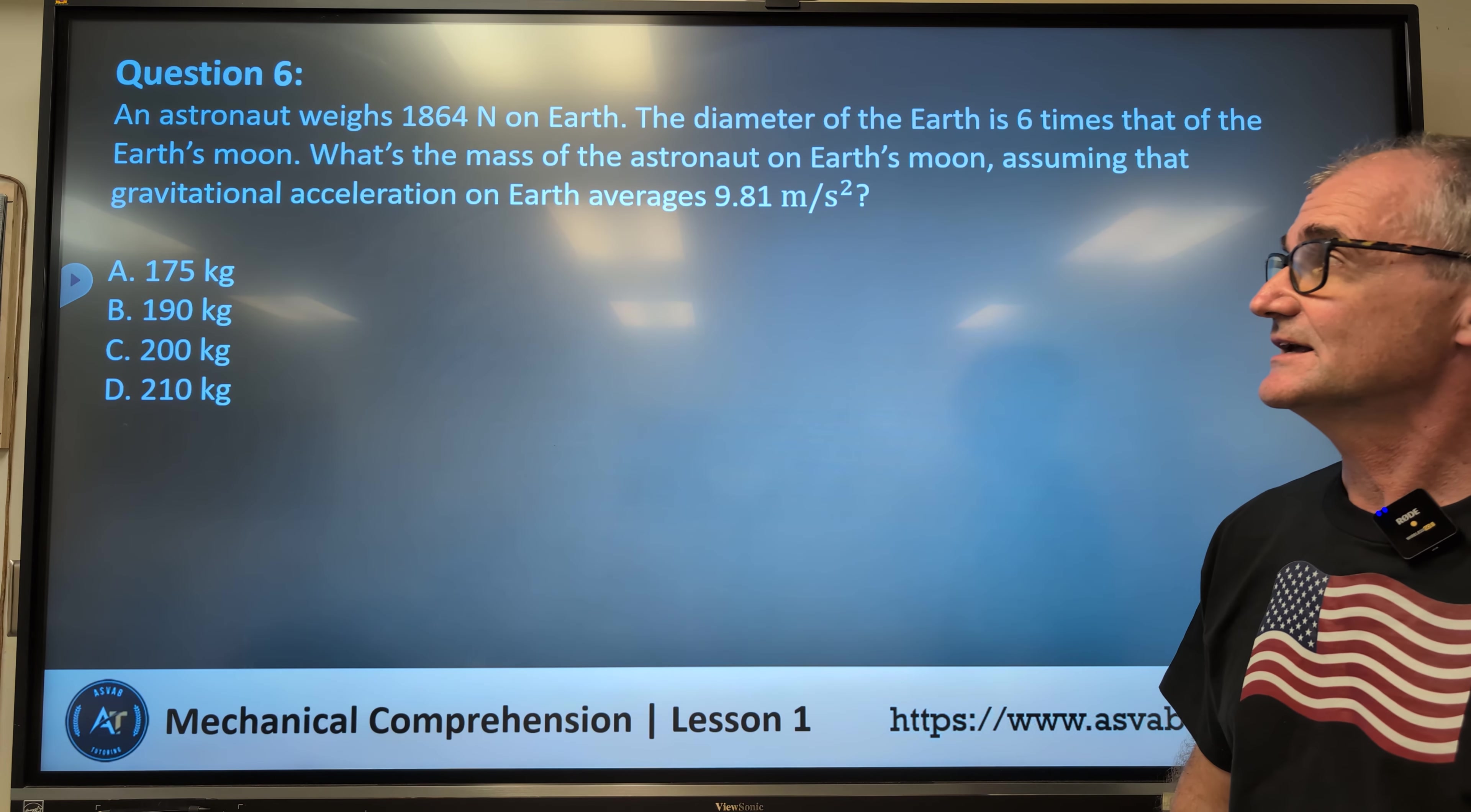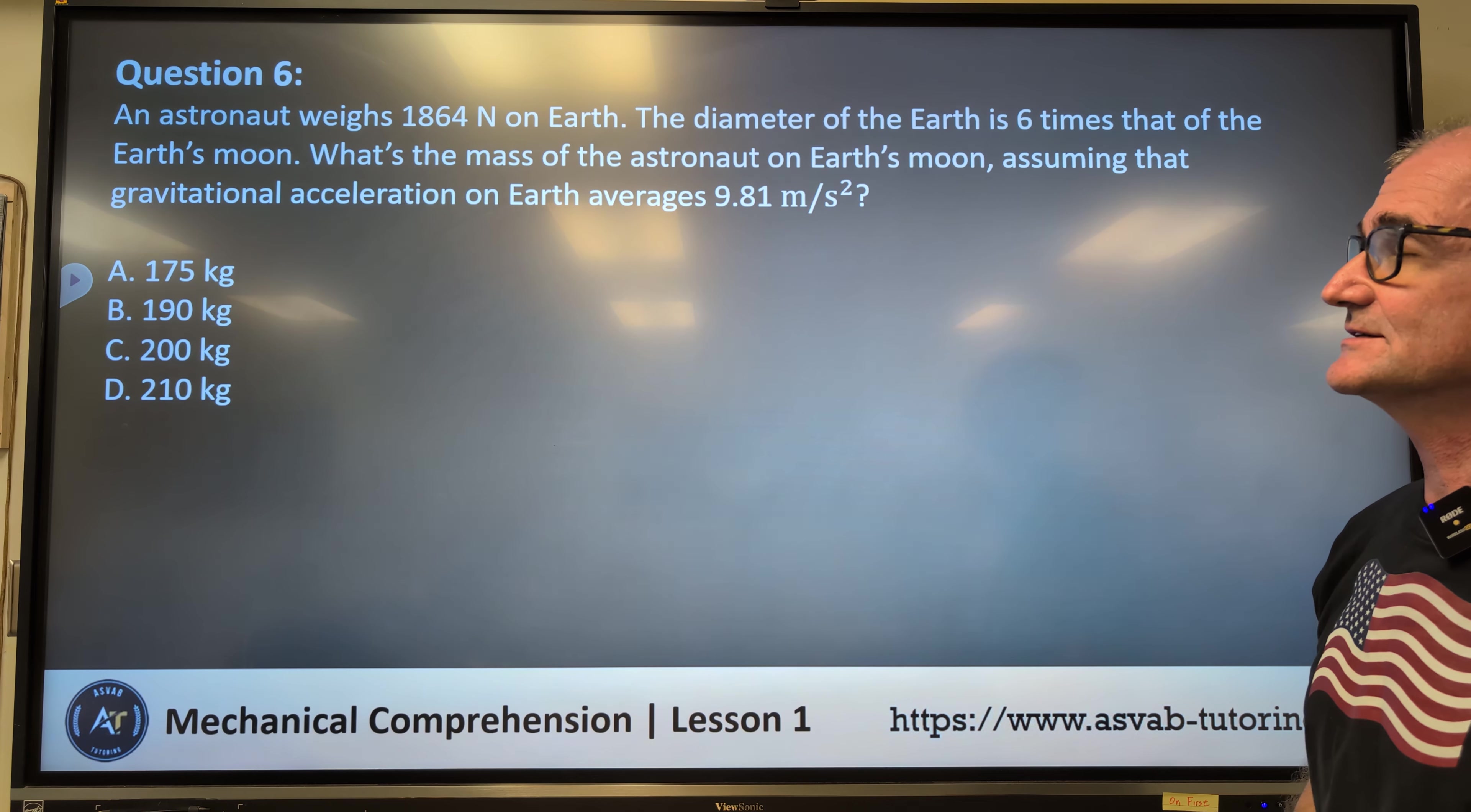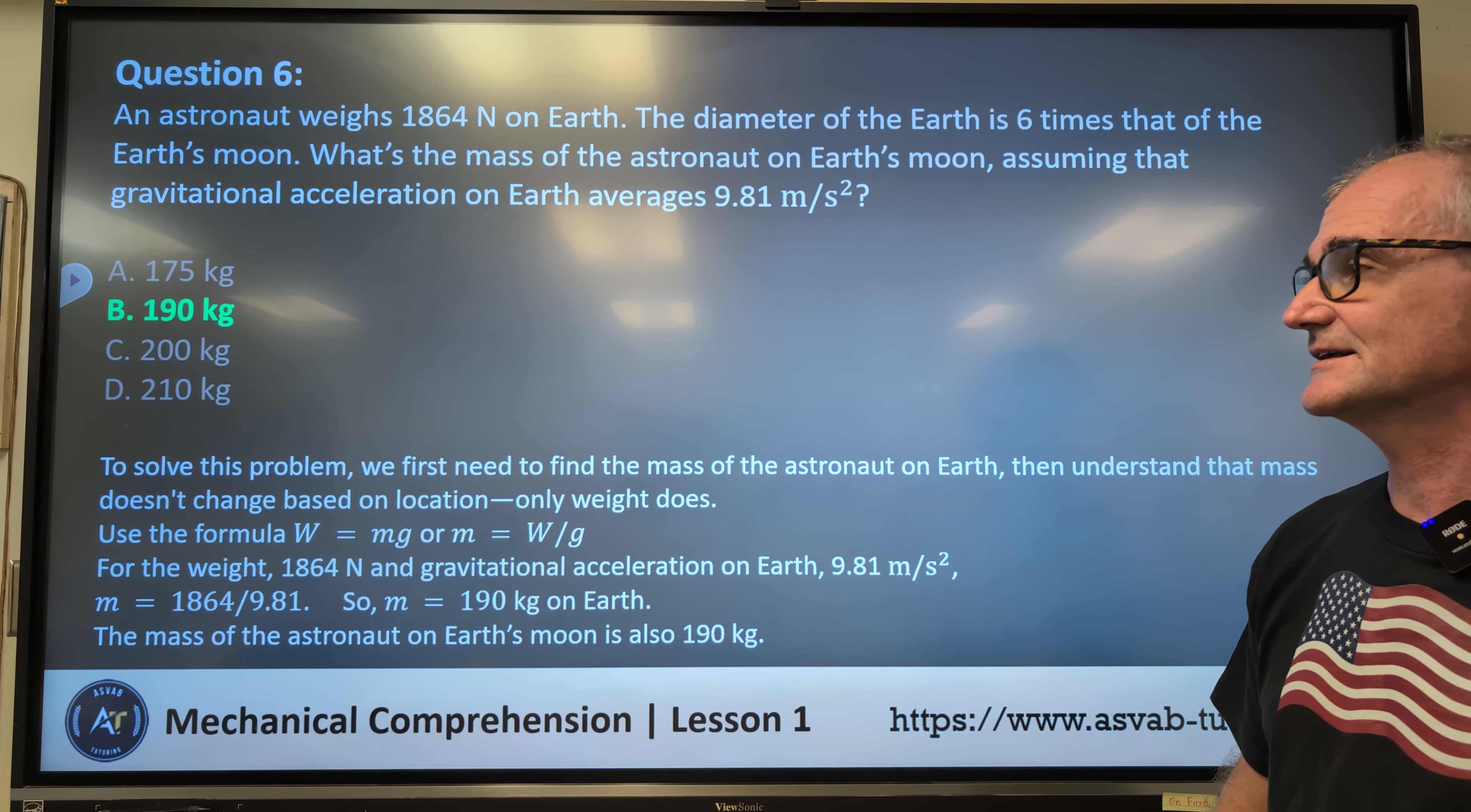Question six. An astronaut weighs 1,864 Newtons on Earth. The diameter of Earth is six times that of Earth's moon. What's the mass of an astronaut on Earth's moon, assuming that gravitational acceleration on Earth is 9.8 meters per second squared? Pause the video. Think about it a little bit. Work it out. Unpause the video. And here's the answer for number six. Correct answer is B, 190 kilograms.